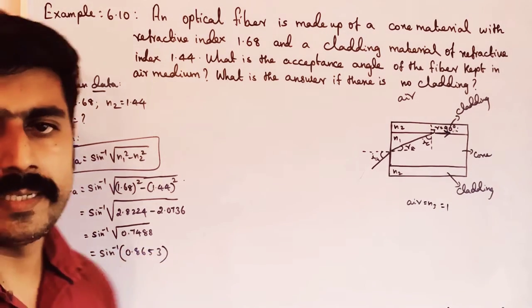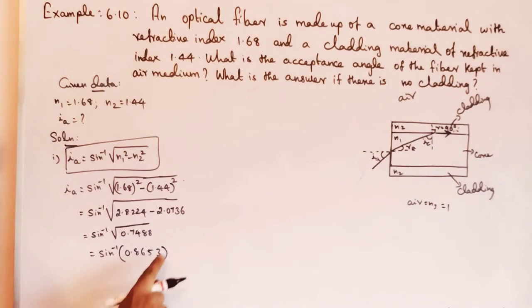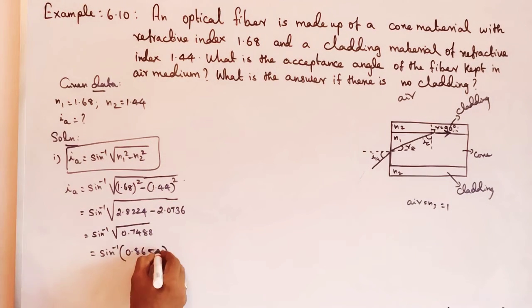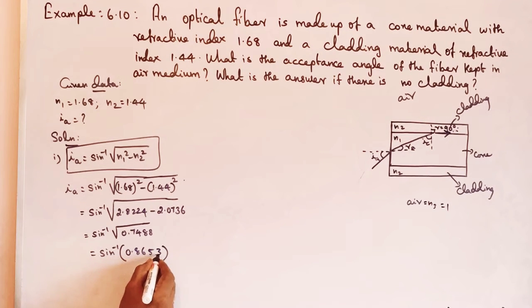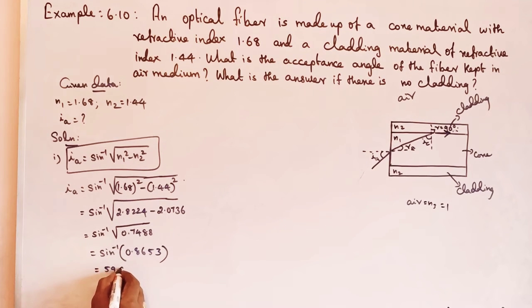So this is sin inverse of 0.8653, which is equal to 59.91 degrees.